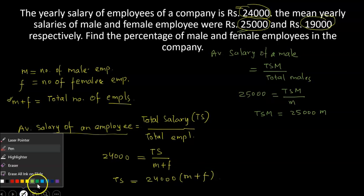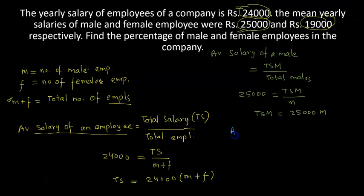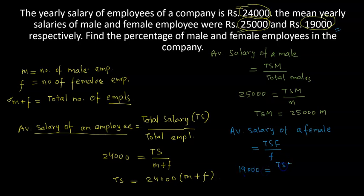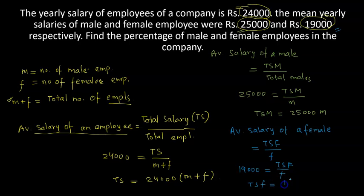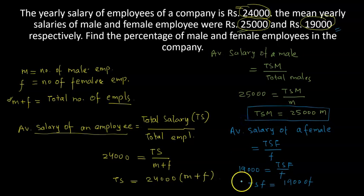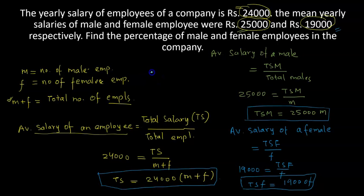For the third piece of information: average salary of females equals total salary of females divided by total number of females F. It's already given as 19,000, so 19,000 equals total salary of females divided by F. Therefore total salary of females is 19,000 times F. Now total salary equals total salary of males plus total salary of females — what males and females are getting combined makes up the total salary.